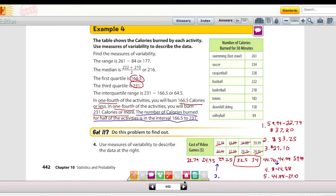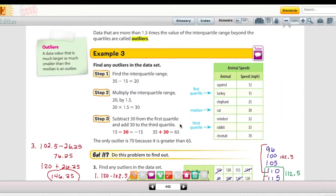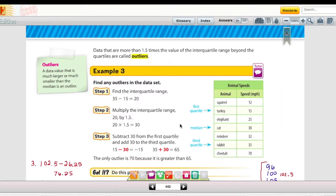For the next example on page 442, the top of page 442, you have one more vocabulary word, outliers. Any data that is more than one and a half times the value of the interquartile range beyond the quartiles is called an outlier. So again, in the example, we're given steps, step one, two, and three. I'm going to follow those same steps in my example.